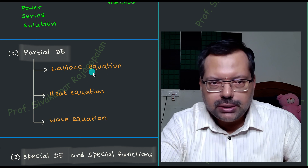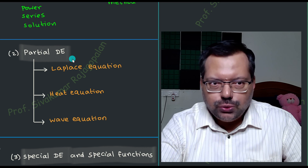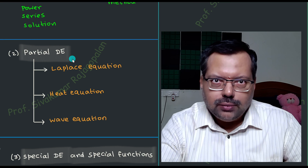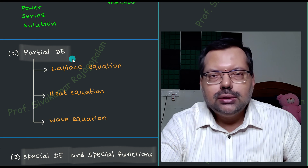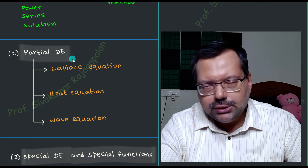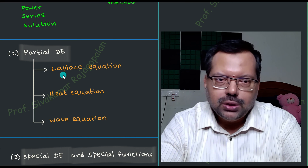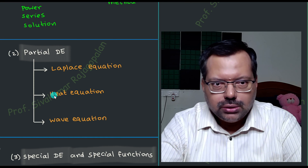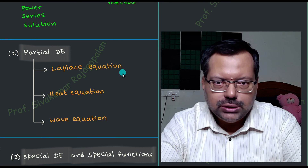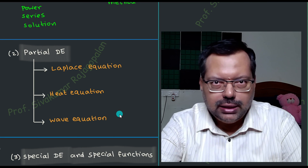Once we study partial differential equations, an important point is that we will study the solutions in three different coordinate systems: three-dimensional Cartesian, three-dimensional cylindrical polar, and three-dimensional spherical polar coordinate systems. So you will have to repeat the solution in three coordinate systems for each equation — Laplace, heat, and wave — giving nine combinations in total, each one fairly lengthy.